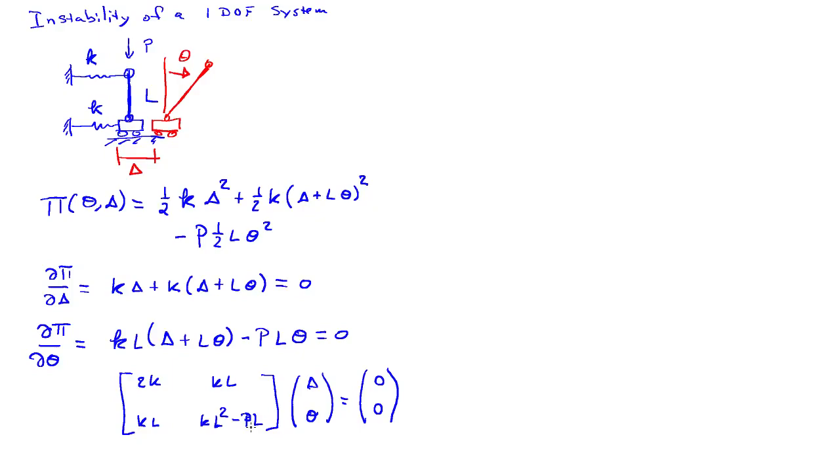So the trivial solution is always a solution for any value of P. So trivial meaning delta equals zero, theta equals zero. But if I want a non-trivial solution, then I want the determinant of this matrix here to be equal to zero.